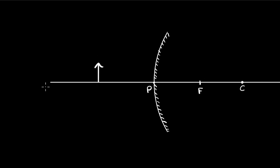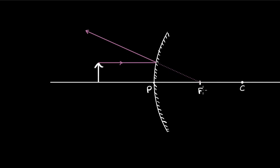When you keep the object in front of the mirror, there's only one case. Just like before, I'm going to draw one ray of light that is parallel to the principal axis. This time this ray will not go through the focus because rays of light don't go inside the mirror — it will reflect such that it appears to come from the focus. That's how we draw this ray, and we need to be slightly more careful while drawing it.